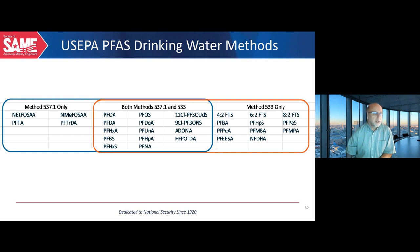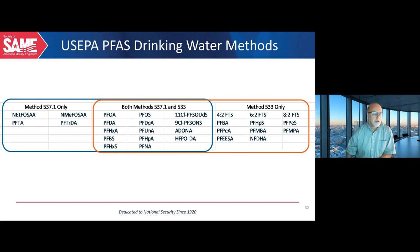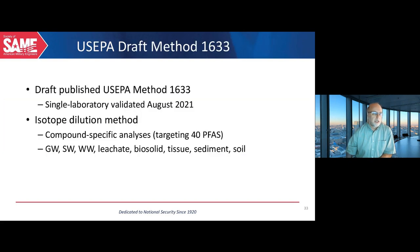The analyte lists covered by these methods differ: compounds covered by both 537.1 and 533 are in the middle, with four compounds unique to 537.1 on the left and additional compounds unique to 533 on the right. With UCMR 5, the use of both methods will be required. This list of analytes will most likely move forward with the analysis of other matrices as well, using different methods, though that has yet to be determined.